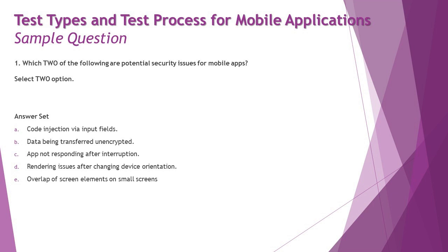Looking at the answer side of this question: we have code injection via input fields, which is a security concern, and data being transferred unencrypted, which relates to encryption and decryption — also a security concern. So you need to be alert when the very first option itself is telling you the right answer, but we want to confirm our assumptions by validating the other three options and justifying why they are not correct.